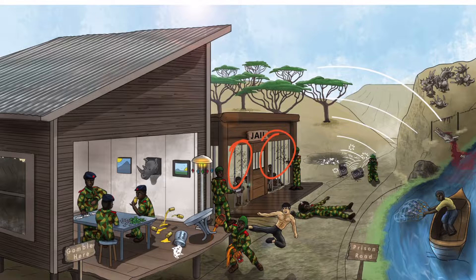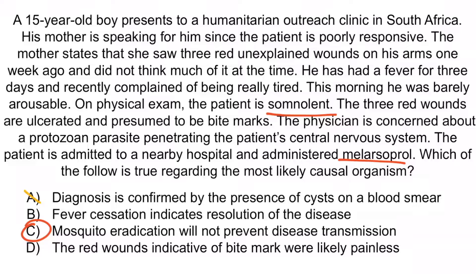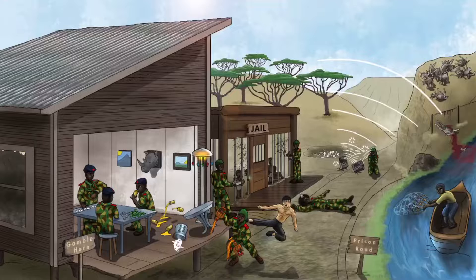Recall these teeny flies represent tsetse flies. Choice A is wrong because diagnosis is confirmed with the presence of trypomastigotes on peripheral blood smear, not cysts — remember the tripping goats. Choice B is wrong because fevers can come and go due to the antigenic variation of the parasite, represented by the gems on that heat lamp. Choice D is wrong because tsetse flies create painful ulcers, not painless ones — remember those red ulcers on those poor kids. And that should be all you need to know about African trypanosomiasis.